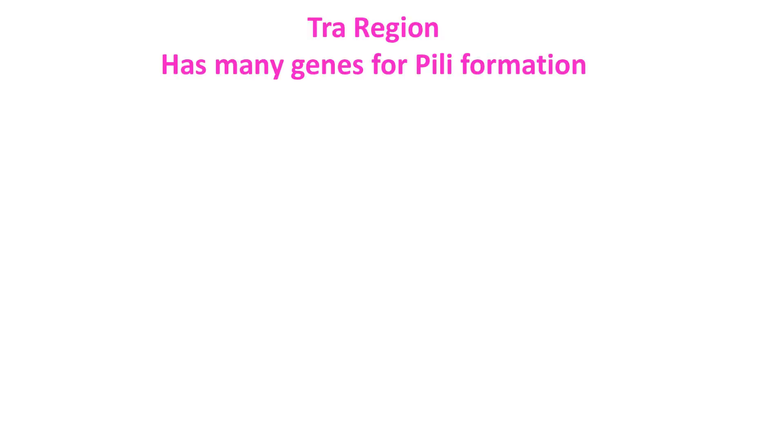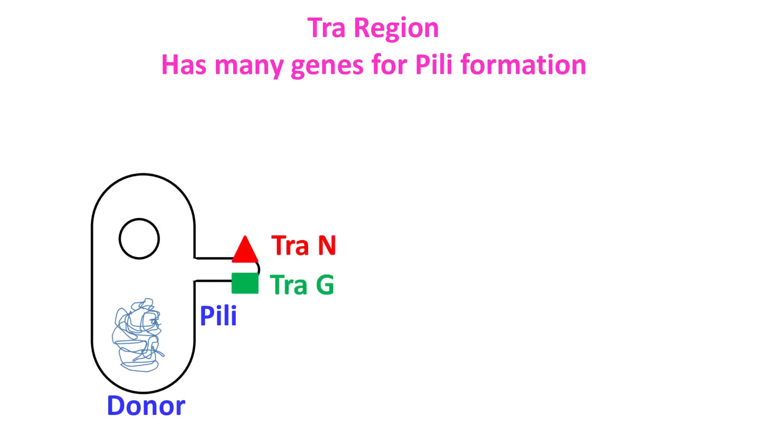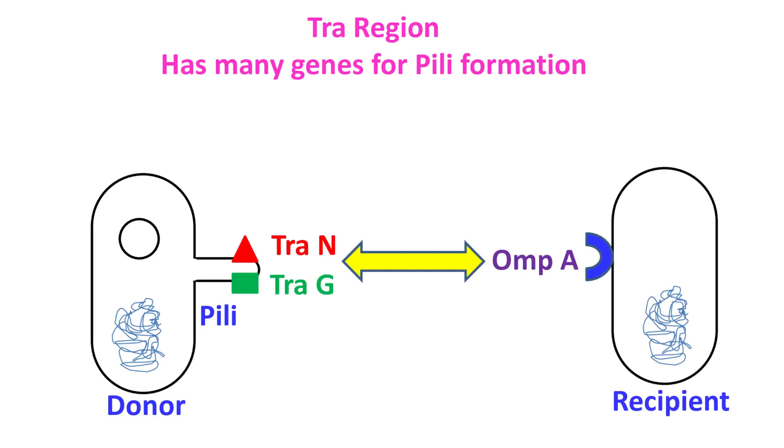The tra-region has many genes that are involved in the formation of pili. The tip of this structure has TraN and TraG proteins. These proteins interact with the OmpA protein present on the surface of the recipient cell.